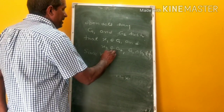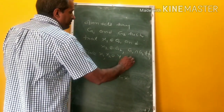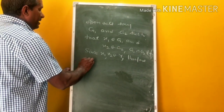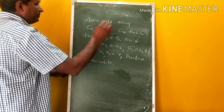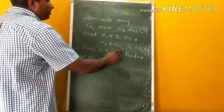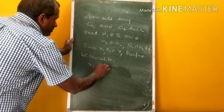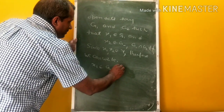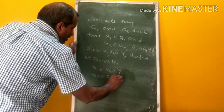Since x1 and x2 belong to Y, therefore we can write x1 belongs to G1 and x1 belongs to Y, so x1 belongs to G1 intersection Y. Similarly, x2 belongs to G2 and x2 belongs to Y, so x2 belongs to G2 intersection Y.